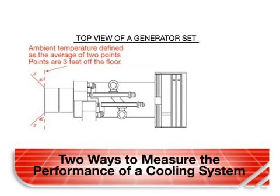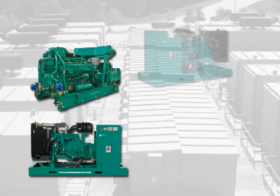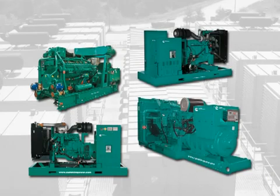This temperature is typically measured as an average of two points, as shown in the diagram. In the case of enclosed generator sets, the temperature is typically measured at the air inlet louver. The AOC temperature, on the other hand, is measured on the face of the radiator. The air flowing through the radiator is significantly warmer than the air entering the system, so AOC temperatures are higher than corresponding ambient ones.